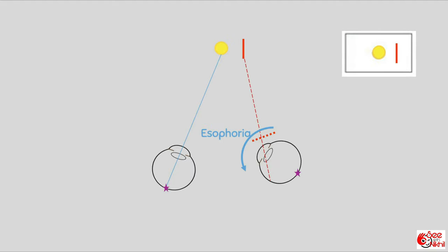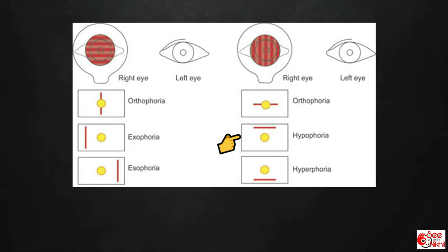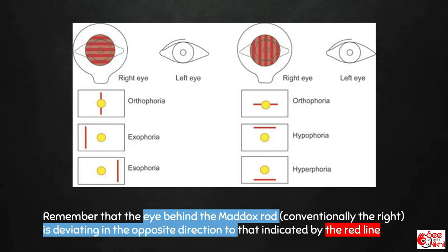In esophoria, light will fall on a point on the retina that is more nasal to the fovea, so the image will be shifted temporally. In right eye exophoria, the patient will see the line towards the left; in right eye esophoria, towards the right. In hypophoria, the eye goes down and the red line is seen up. In hyperphoria, the eye goes up and the red line is seen down. Remember: in all cases of Maddox rod test, the eye behind the Maddox rod is deviating opposite to the direction of the red line. For testing vertical deviations, a horizontal strip is needed, so the orientation of the Maddox rod cylinders is kept vertical.